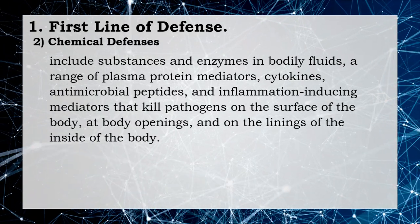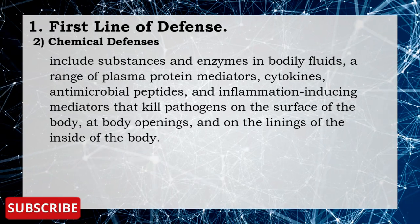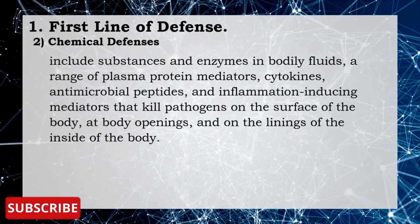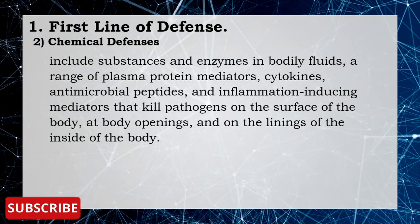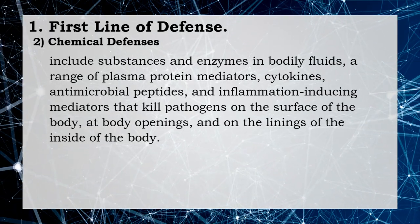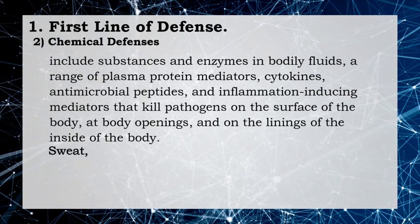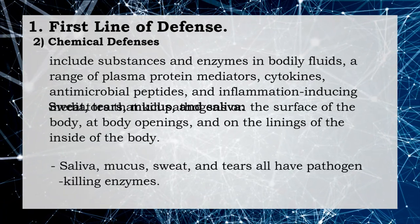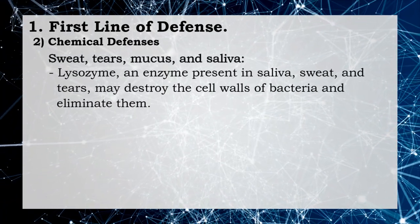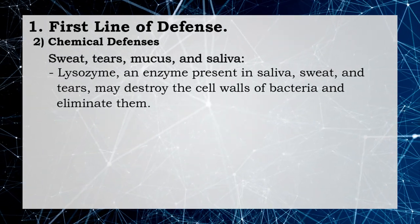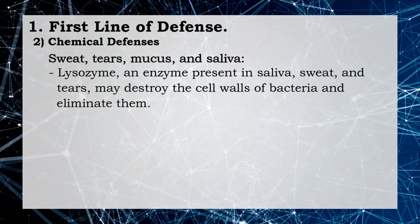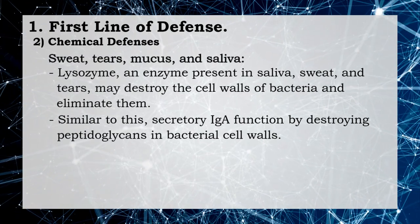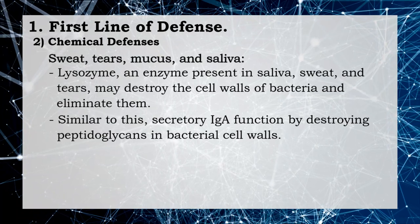Chemical defenses include substances and enzymes in bodily fluids: a range of plasma protein mediators, cytokines, antimicrobial peptides, and inflammation-inducing mediators that kill pathogens on the surface of the body, at body openings, and on the linings of the inside of the body. Sweat, tears, mucus, and saliva all have pathogen-killing enzymes such as lysozyme, an enzyme present in saliva, sweat, and tears which may destroy the cell wall of bacteria. Similarly, secretory IgA functions by destroying peptidoglycan in bacterial cell walls.